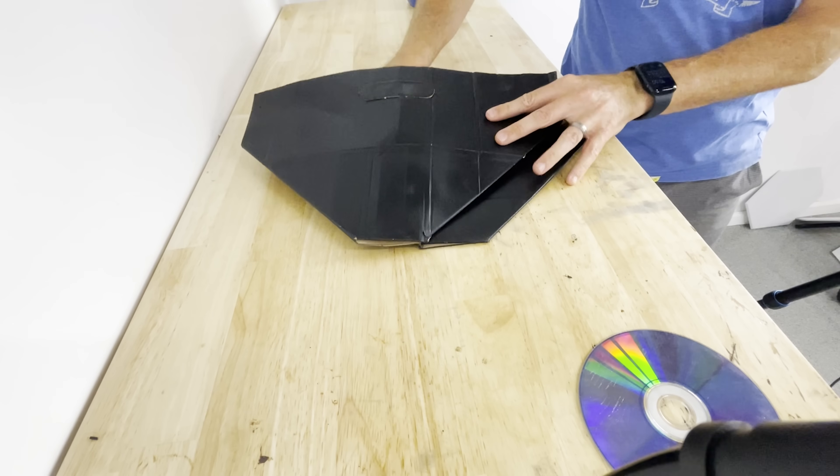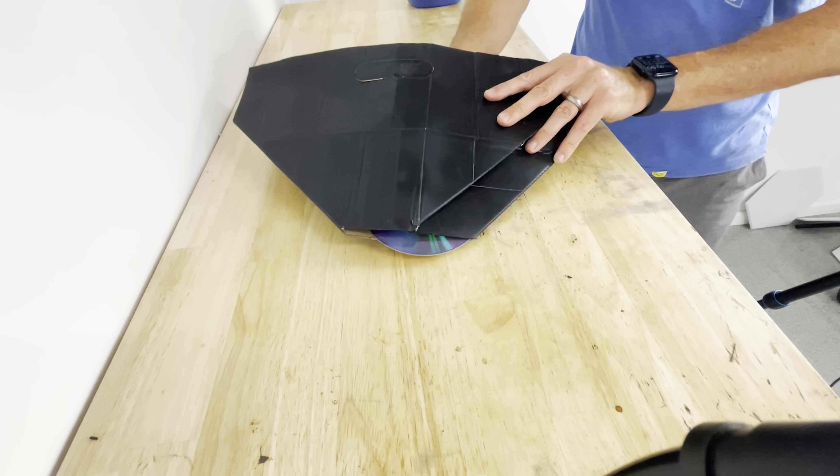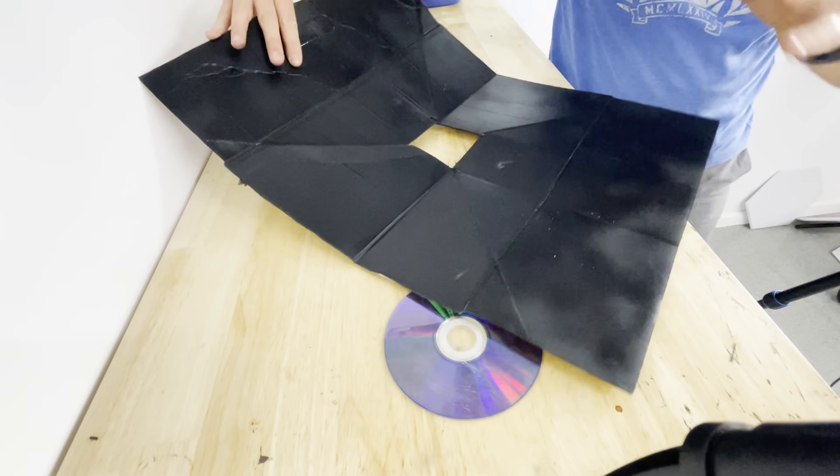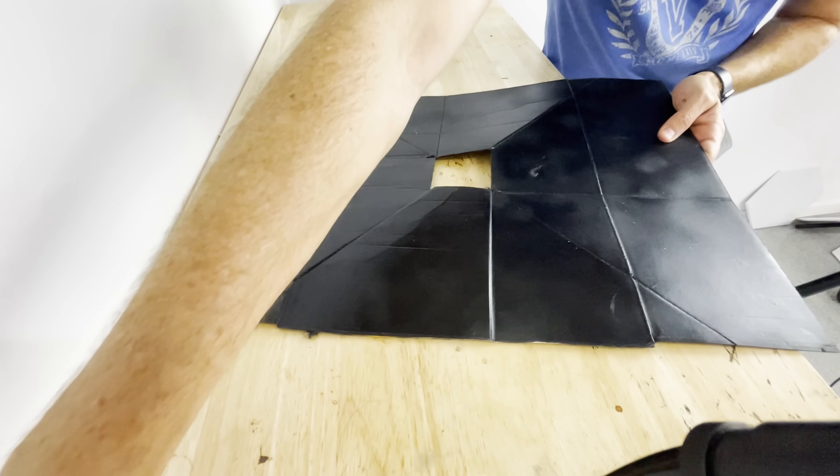But if I just fold this board in a certain way, then something magical happens. The disc suddenly fits. How did this magically happen? The disc won't fit, then it suddenly fits.